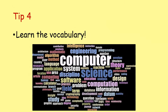Tip number four: learn the vocabulary. The theory for computer science — regardless of the specification, OCR, AQA, whatever — a lot of the theory is just about learning what the words are, what the definitions are, and when to use them. One of the most frustrating things as a teacher is marking mock exams where students write vague, woolly answers. If you learn the words and the definitions, there are so many easy marks you'll almost guarantee yourself a good grade. So learn those words — what do they mean, what definitions are they looking for in the exam?